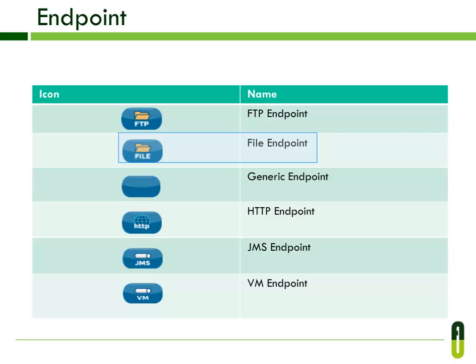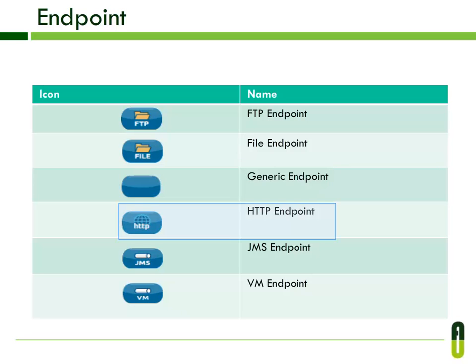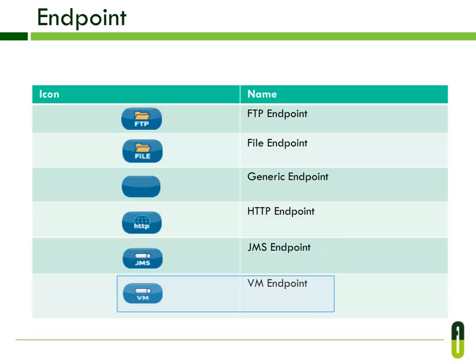The File endpoint reads a file from the file system. The Generic endpoint is used to dynamically configure an endpoint using Mule expressions and specifying paths. The HTTP endpoint processes HTTP requests or responses. The JMS endpoint sends or receives messages from a JMS queue. The VM endpoint is an in-memory queue that allows you to integrate different flows or services in the same Mule config.